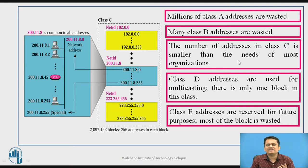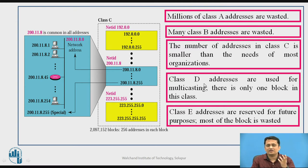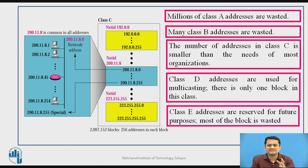So there is a fundamental problem with classful addressing. Class D and class E are reserved — class D and class E cover most of the special IP addresses we will discuss now, and this is one more reason why we go for classless IP address representation.